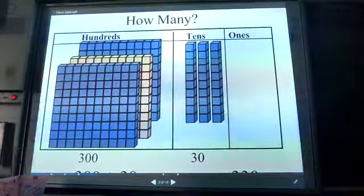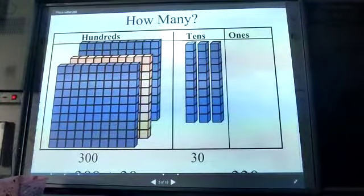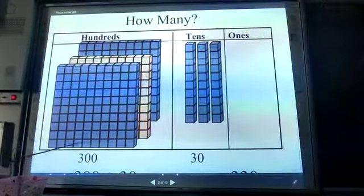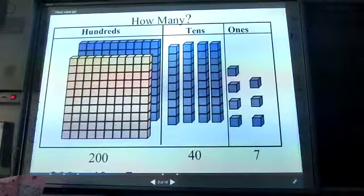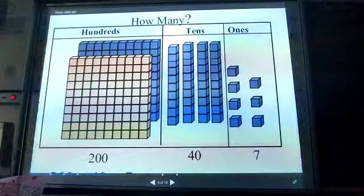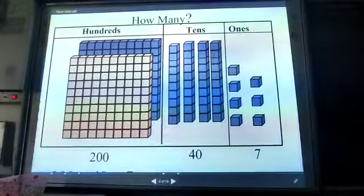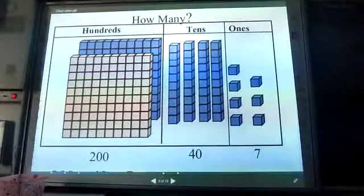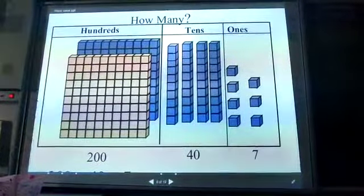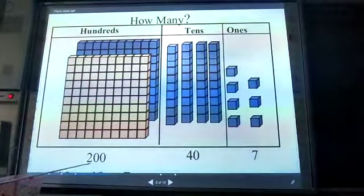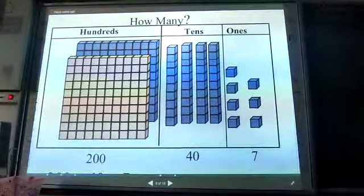Same here. You can see there is nothing in the ones column, so it will be 313. Same here. There are 2 boxes of 100, 4 boxes of 10, and 7 cubes of 1. So the number will be 247.